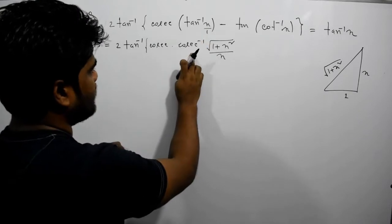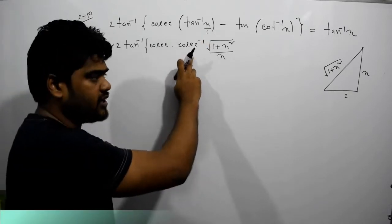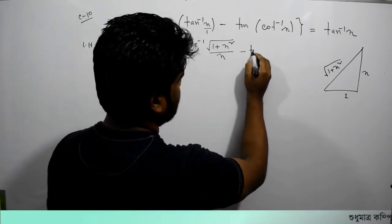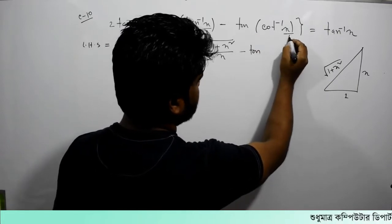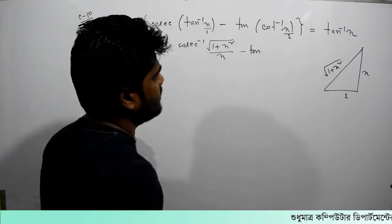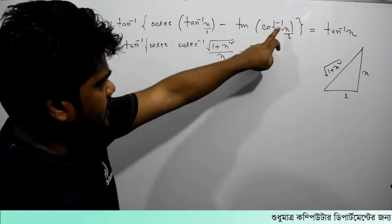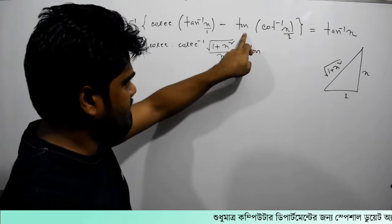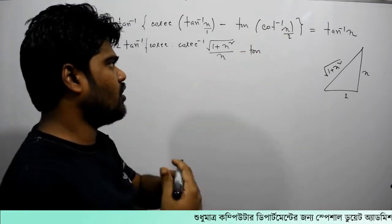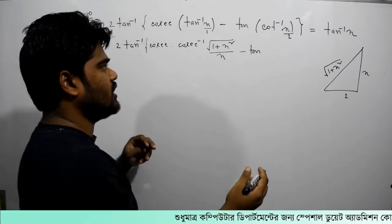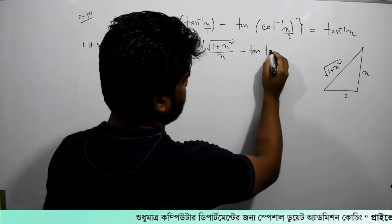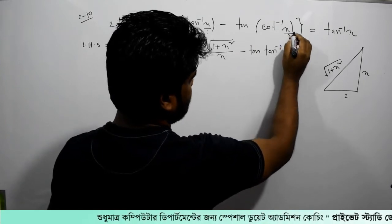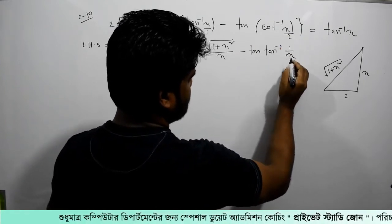This is 10. This is minus 1. This is 10 and 1. So what is this? This is 10. This is 10 inverse.